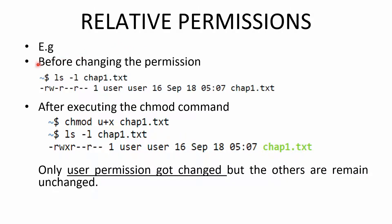Let us take a simple example. Before changing the permission, the access rights associated with chap1.txt — a regular file — show read, write, execute for the owner, only read permission for group, and only read permission for others. Now let us specify the execute permission for the owner. You specify the type of user first — owner — and since we are adding the permission, it is plus.